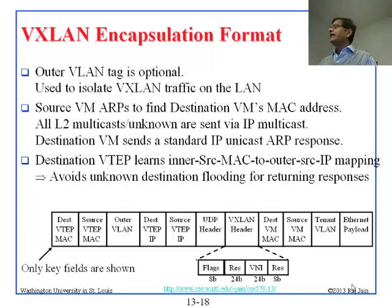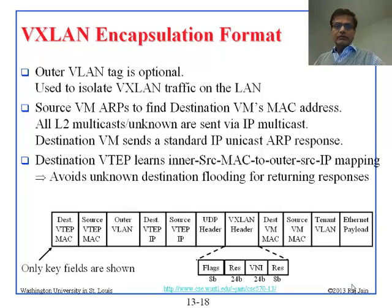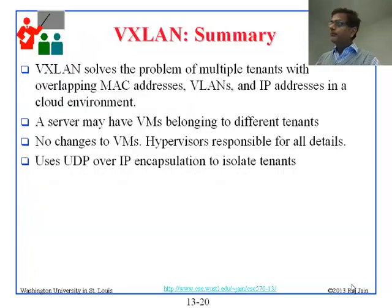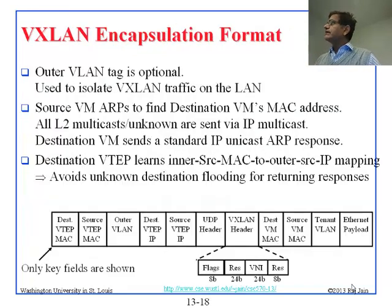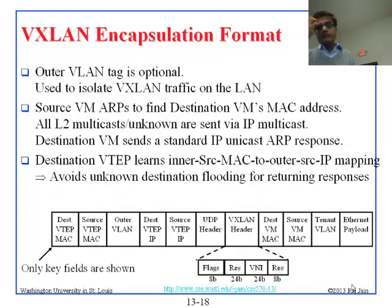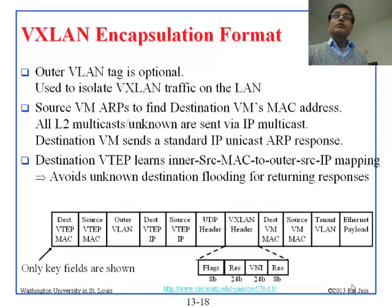The VXLAN header has only four fields; the most important field is VNI — everything else is reserved. The flags and reserved fields take up most of the header, but the main thing is that this header is essentially one number, which is the VNI — what color you belong to. So VNI blue, VNI red, or VNI black — that is what is here.